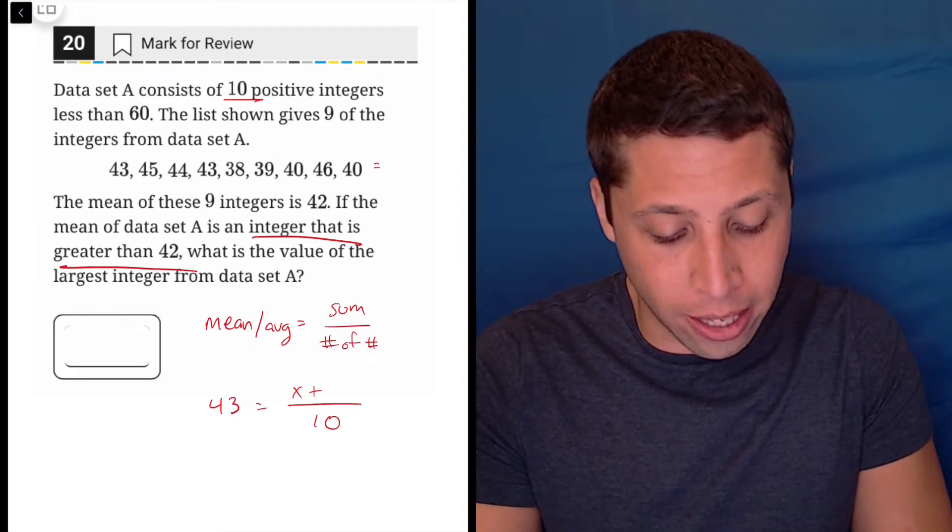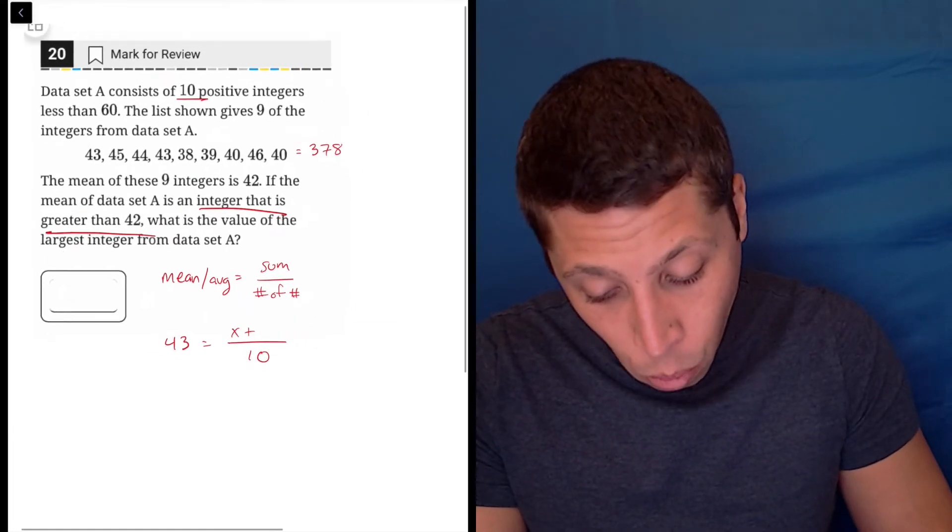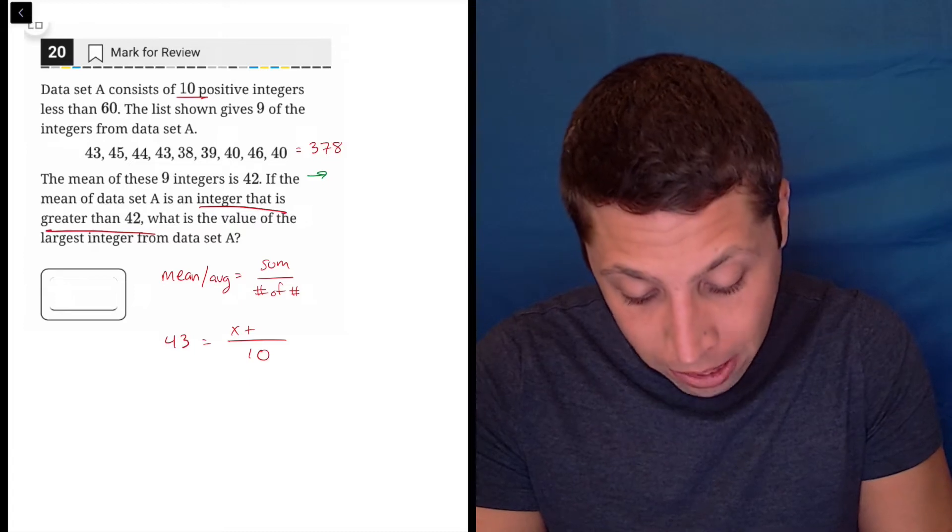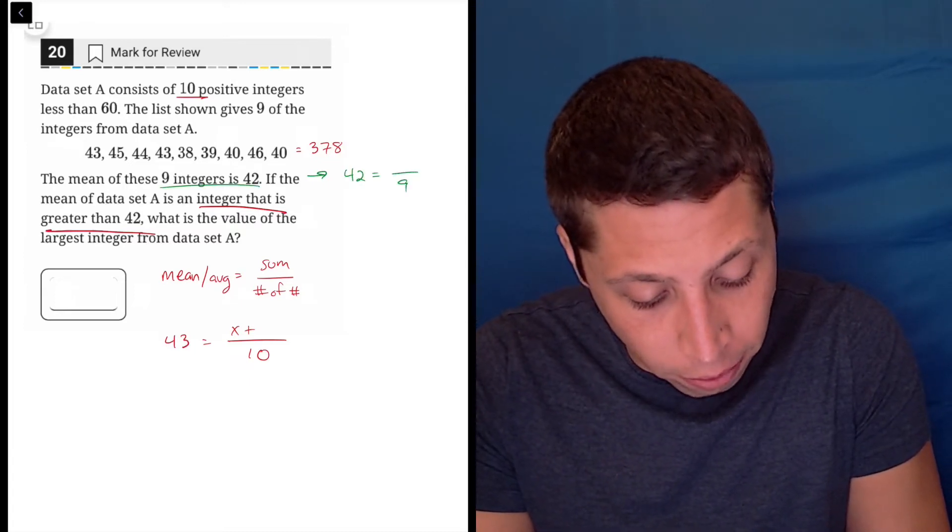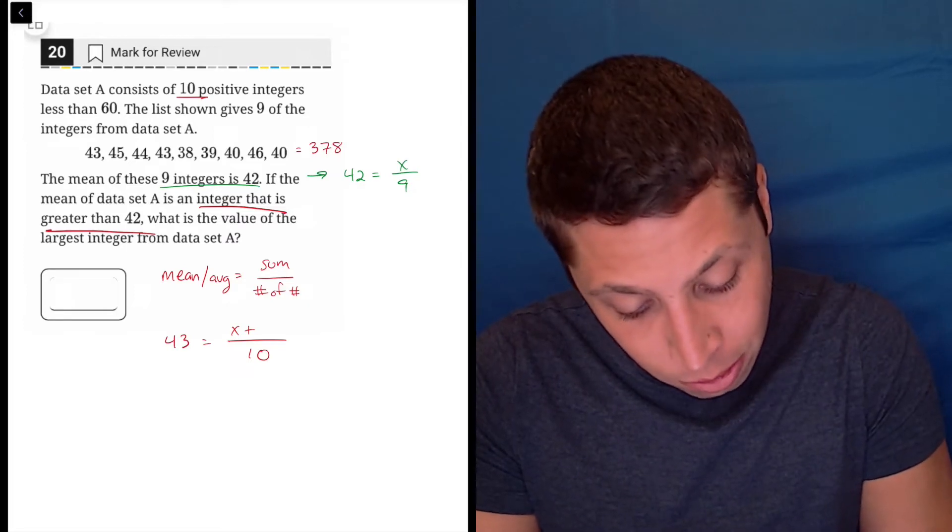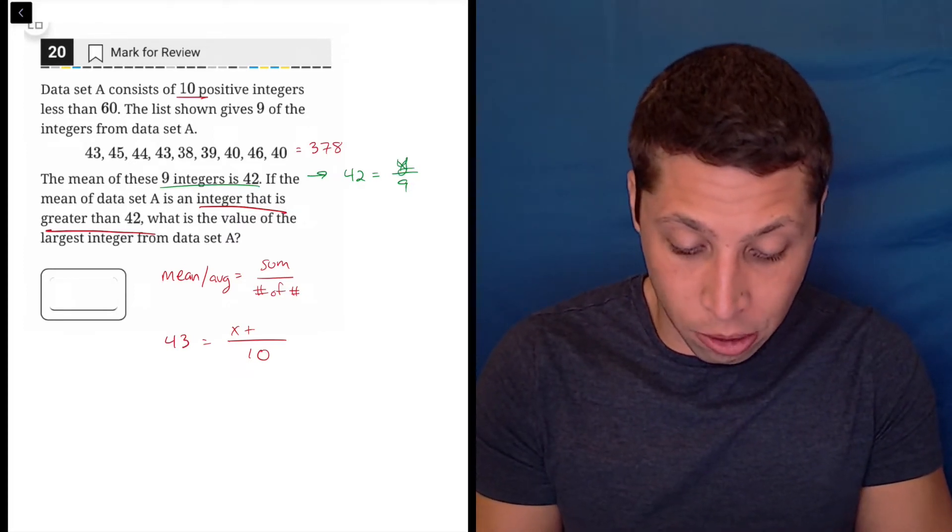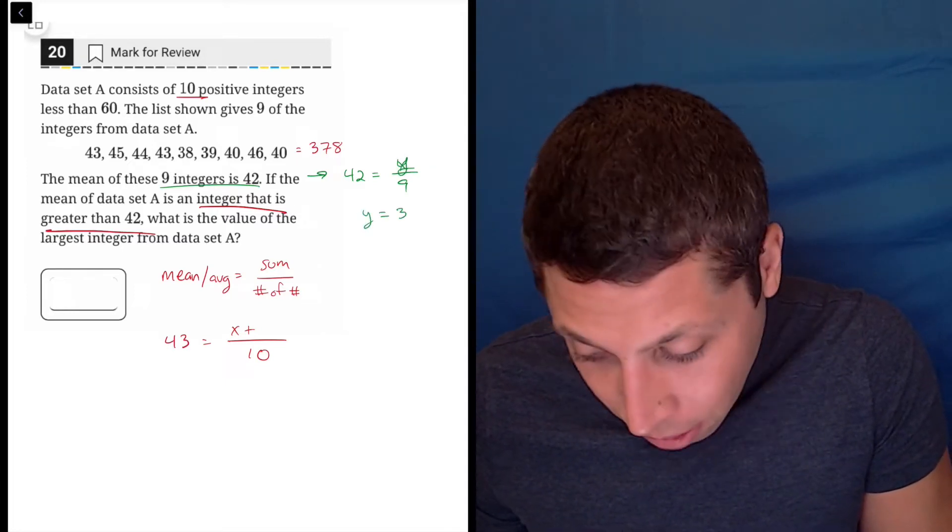So what is the sum of these other nine integers? It's 378. I can literally just do it or I could even use another version of the average formula because they tell me the mean is 42 and there are nine integers. Nine times 42 is 378. So the sum would be 378.